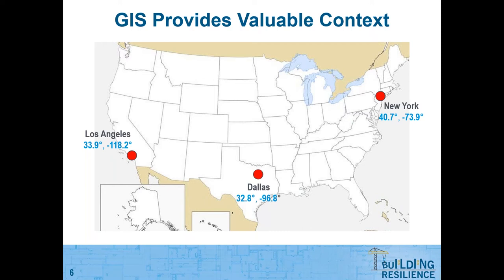Maps provide a context in which geographic information is made easier to understand. When you have geographic context, you don't only see where things are — you can calculate how far points are from each other, check if points are clustered for patterns or trends, and find optimal routes between cities, just like we do on our cell phones with GPS. We can analyze data a lot faster in context when we apply data to maps.